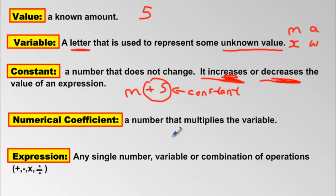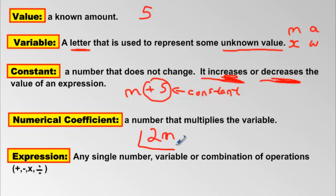A numerical coefficient is the number that multiplies the variable. Let's go back to that mystery amount of marbles and say I double them — that would be times two. A student might ask: where's the times sign? Remember, if you don't see a sign between two numbers, we are multiplying them. We have a two and an M with no symbol between them — that means multiplication. Get used to that. This is called the numerical coefficient because it is multiplying the variable.